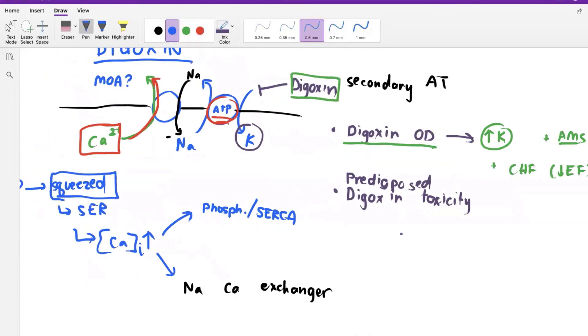What predisposes you to digoxin toxicity is actually the opposite. Hypokalemia. Because if you think about this nice little leaflet, in order to actually fight for that leaf, if you were hypokalemic and you put digoxin into the system, what would have a higher likelihood of binding more avidly? Digoxin or your low potassium? Digoxin. Digoxin. And that's why hypokalemia predisposes you to digoxin toxicity.